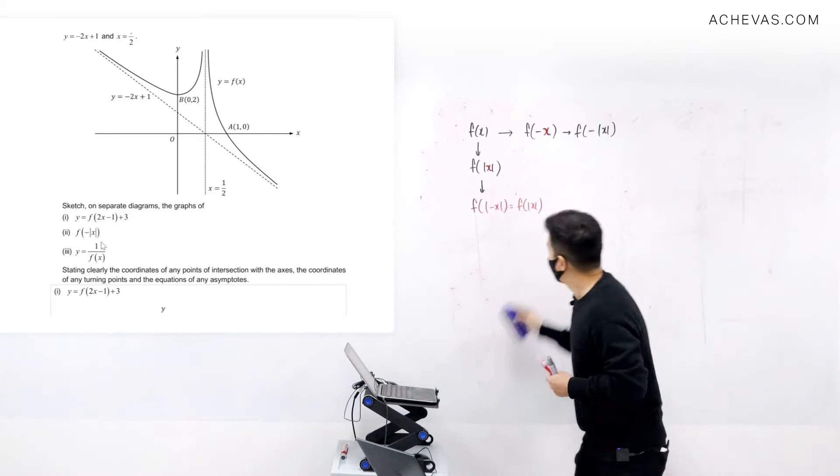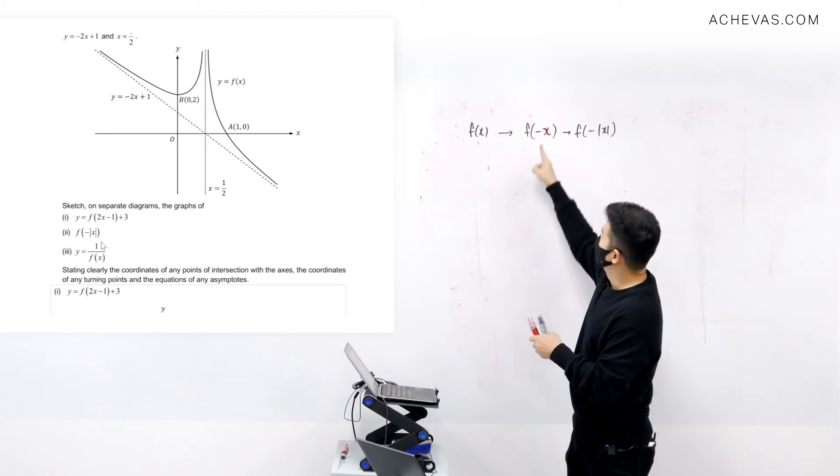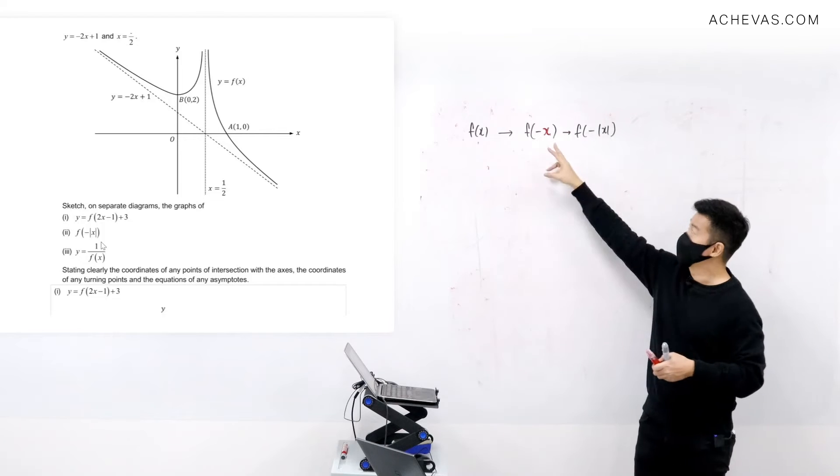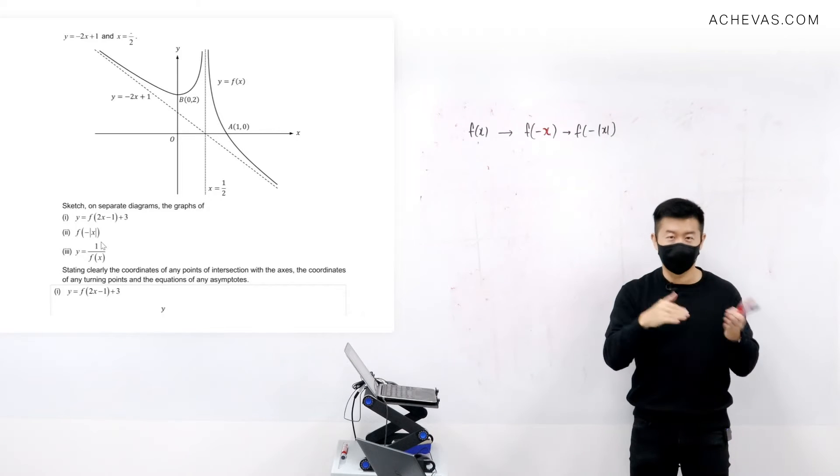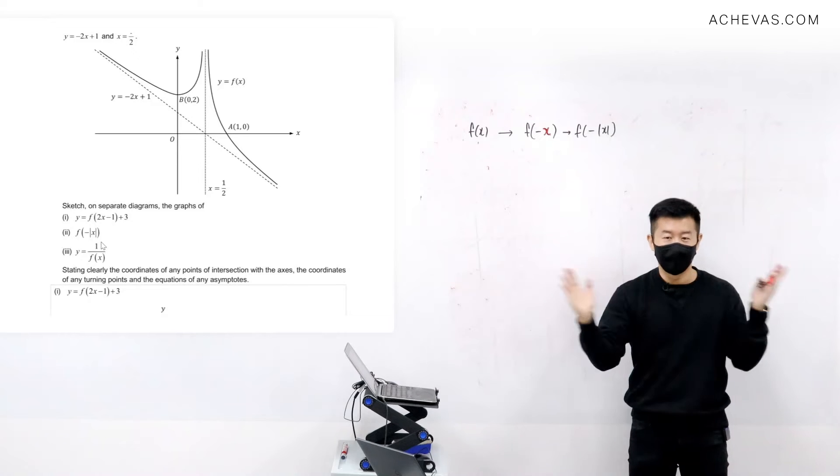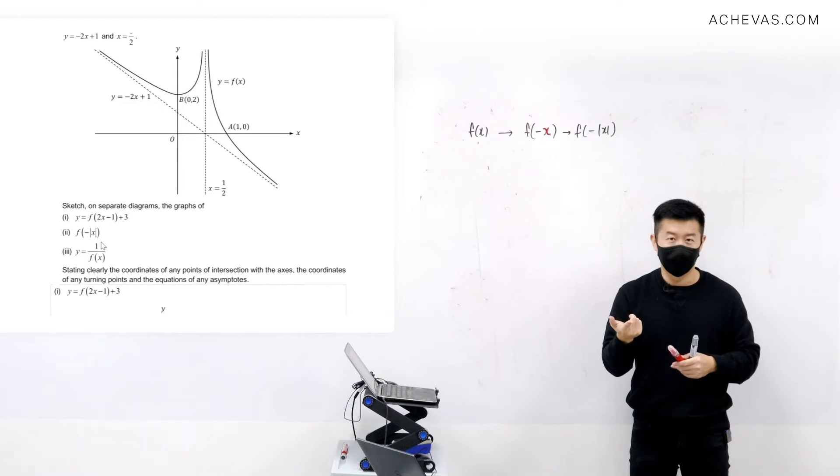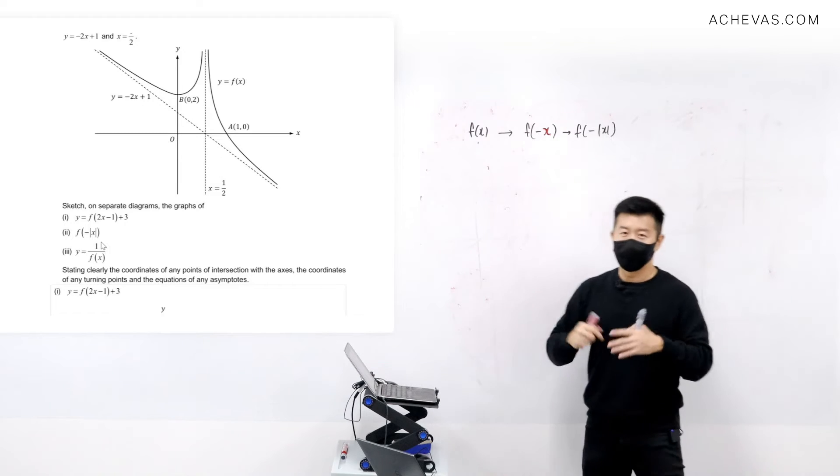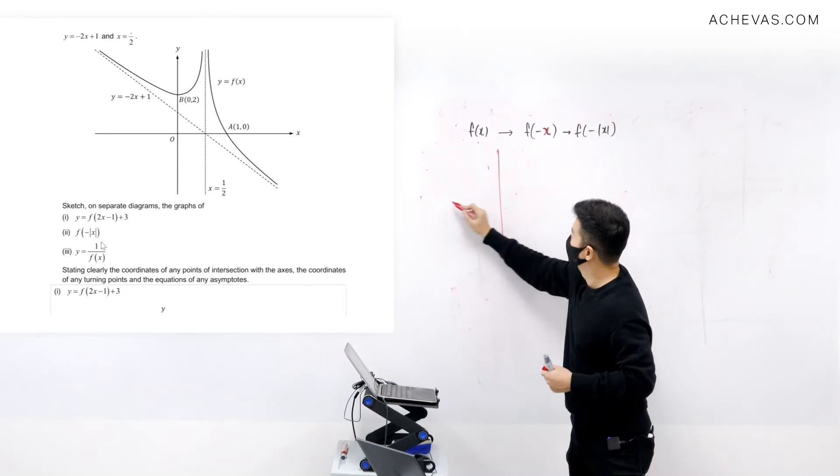So the transformed graph of this will be what? The transformed graph of this is going to be a reflection about the y-axis. Why? Because if I were to try to maintain the same output, then positive x will become negative x, negative x will become positive x. So it is going to be a full reflection about the y-axis. If you use the same explanation that I discussed with you just now, but in the exam, just regurgitate this part.